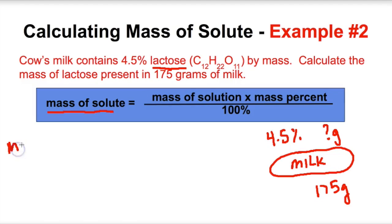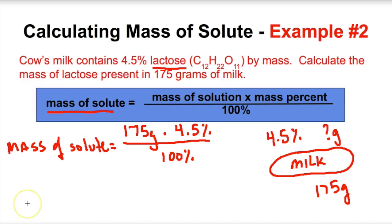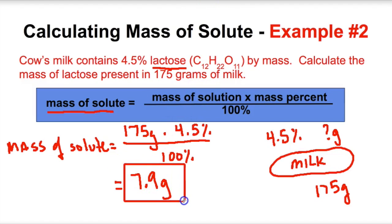To get the mass of the lactose, we take 175 grams times 4.5%, divided by 100%. Putting this in the calculator gives us 7.9 grams of lactose, using the correct number of significant figures. So there are 7.9 grams of lactose dissolved in 175 grams of cow's milk.